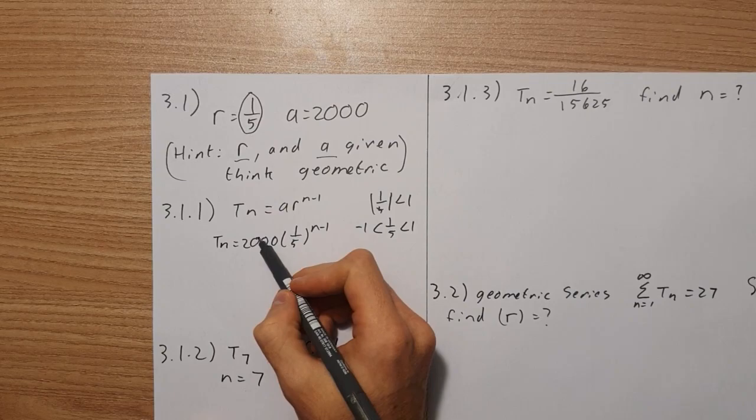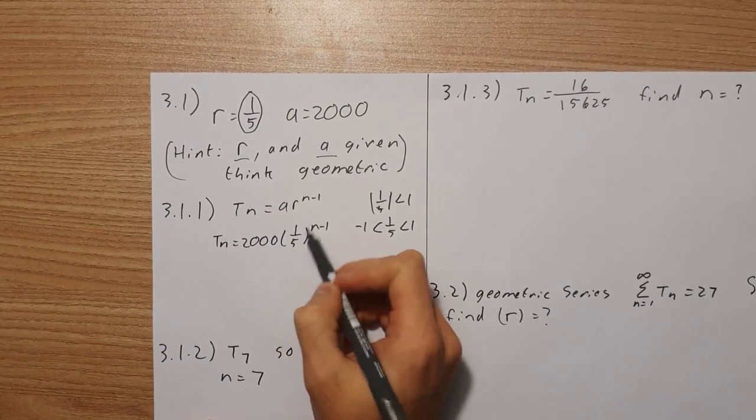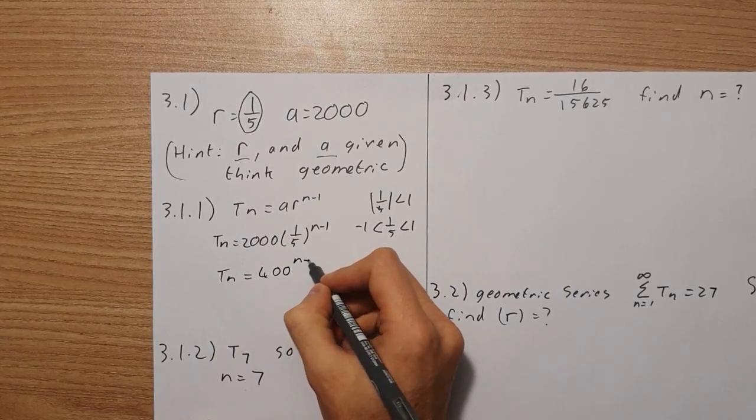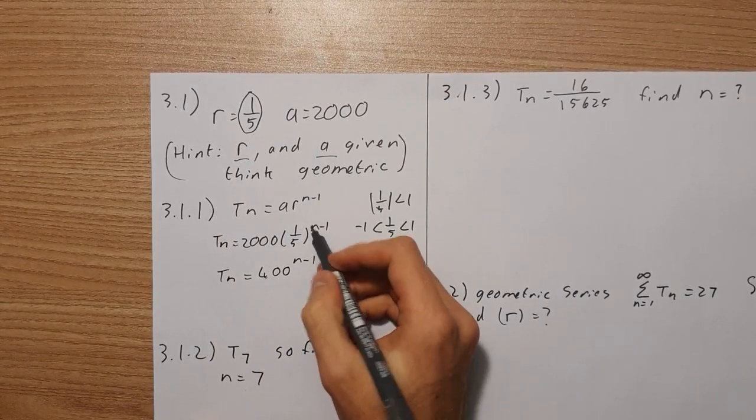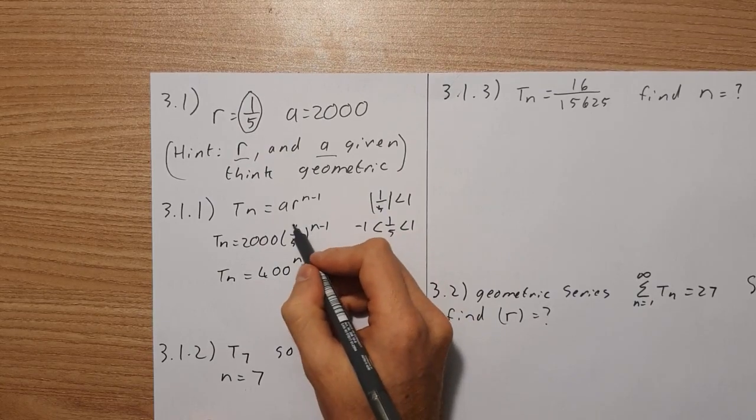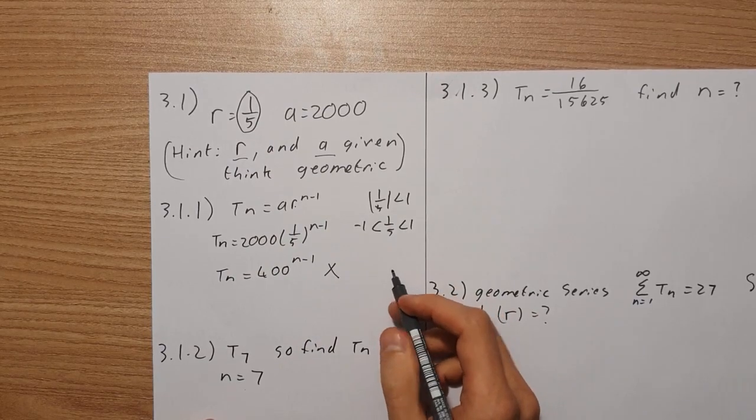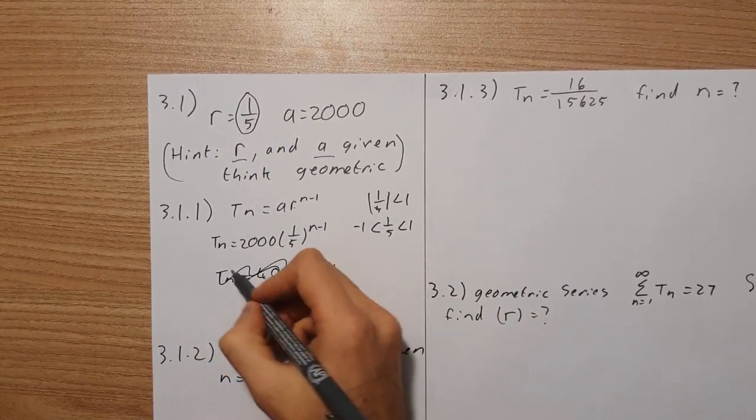Please note you can't distribute that n and then simplify it. By saying 400n minus 1, that is wrong. Why? Because the n minus 1 links to your ratio and not to the entire a times r. This is a no-no.